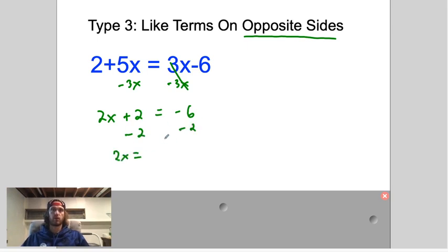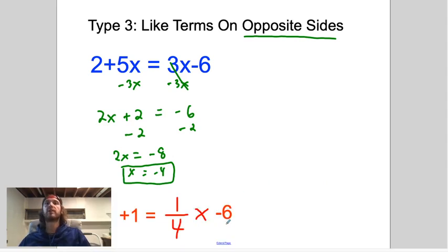2x equals negative 8. Divide both sides by 2 to get x equals negative 4. Fantastico. Okay, let's take a look.